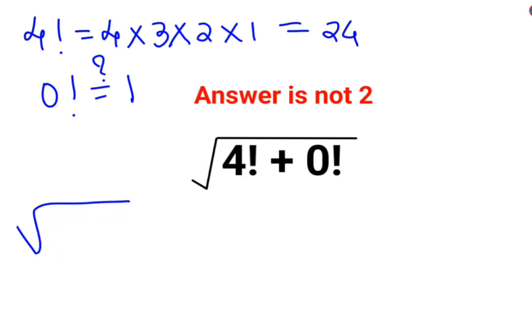So this becomes root of 24 plus 1. So answer for this one is supposed to be root of 25 which is nothing but just 5. Please understand root of a positive value will always get you a positive value.